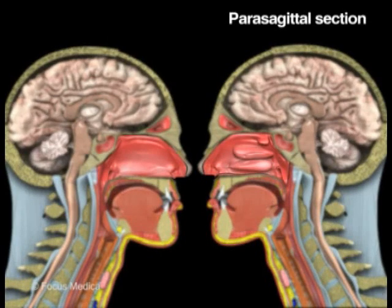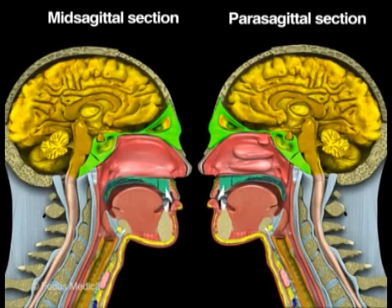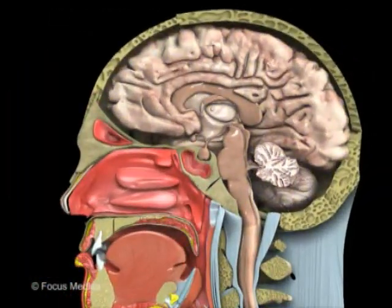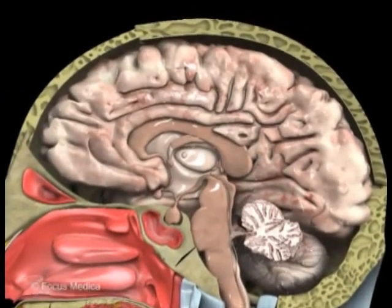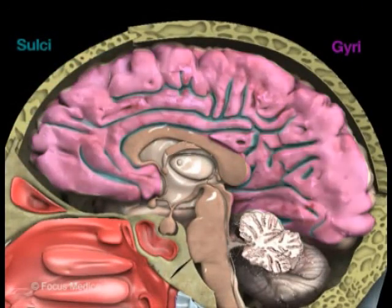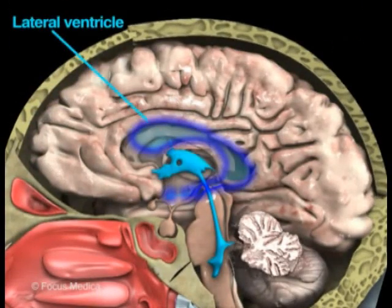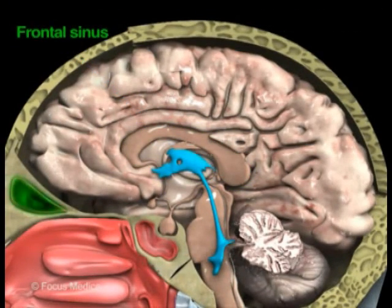The parasagittal section differs from the mid-sagittal section in a few areas only; the rest of the design of the head and neck are similar. The lateral wall of the nasal cavity shows the conchae and the meati in great detail. The medial aspect of the cerebrum is seen with its characteristic sulci and gyri. The lateral ventricles are seen below the corpus callosum. The frontal sinus is seen in full view between the tables of the skull.